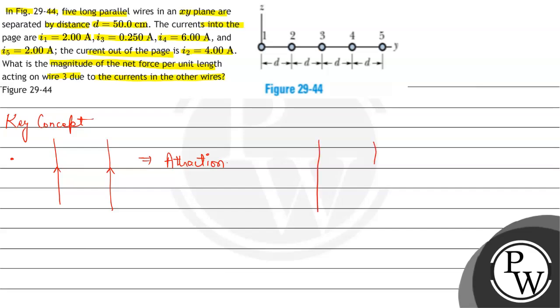And if two wires have opposite direction of current, then they have repulsive force. We can write repulsion here. So this is the first key concept. The second key concept can be given by the formula: force per unit length is given by mu0 i1 i2 upon 2 pi d. This is the formula for force per unit length which is being asked for the case of the third wire.